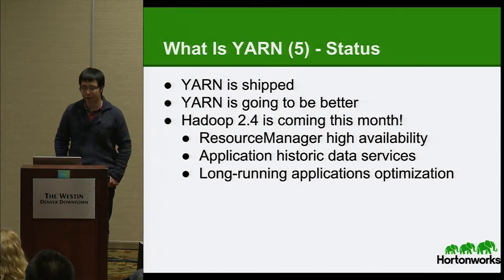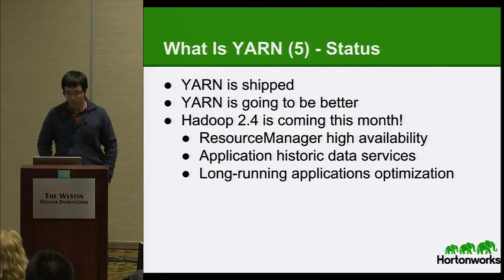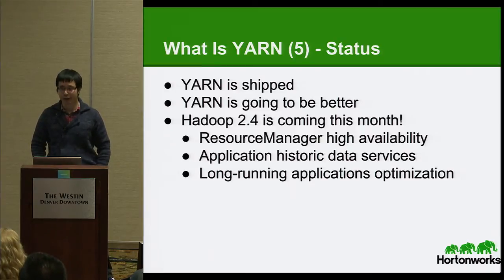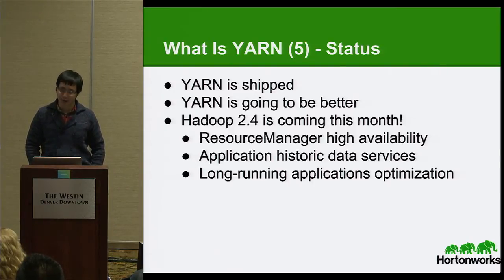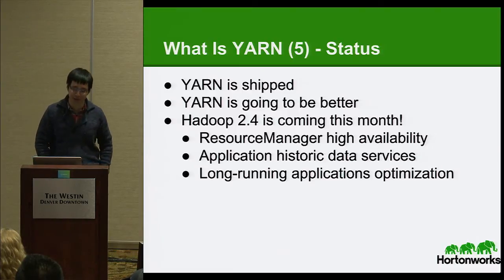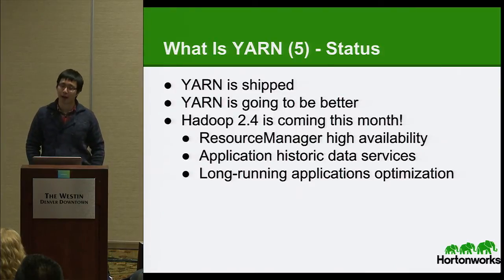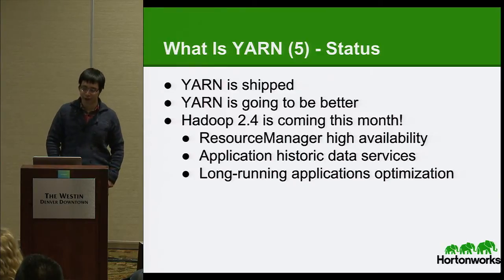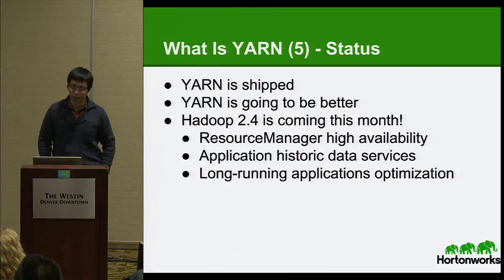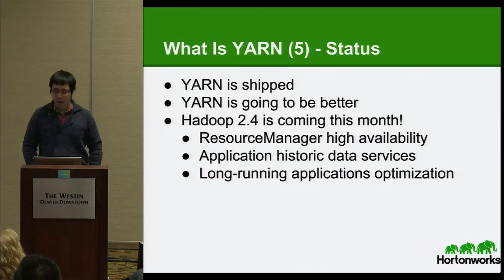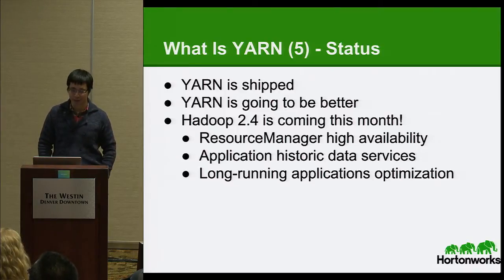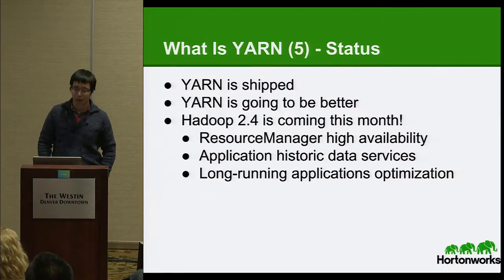Given these motivations, we have spun off the JobTracker and TaskTracker logic out of MapReduce. Now MapReduce is a complete computation framework on its own. We have generalized the JobTracker and TaskTracker logic to be as general as possible to support all kinds of applications as well as long-running services. In the second half of last year we released our first stable version of Apache YARN. In this month, Hadoop 2.4 is going to be released with the following cool features: resource management high availability, application history data service, and long-running application optimizations.